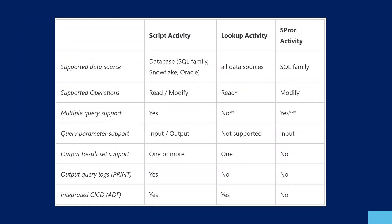Let's go to the presentation. This table clearly explains the difference between Script Activity, Lookup Activity, and Stored Procedure Activity. Script Activity is supported in SQL, Vertica, and Snowflake. Lookup Activity is supported by all data sources at this moment. Stored Procedure Activity is supported by the SQL family of storages. Script Activity can do everything — read data, modify data, delete data, create a table. Lookup Activity is ideally meant for reading data, though you can still use it to update data with a workaround.